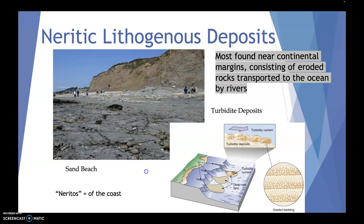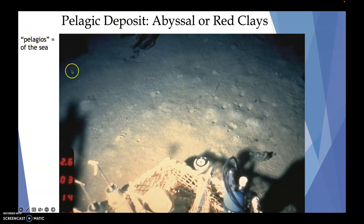Alternatively, we have another term for the deeper oceans called pelagic deposits — abyssal or red clays. Pelagios means of the sea, so as opposed to coming from the land, we're coming from the sea. This image here gives a sense of how smooth and flat it looks overall, maybe a little bit dimply here and there, but a very flat pattern.